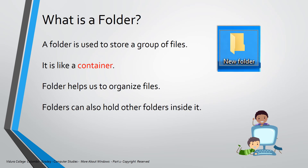What is a folder? You can see a yellow color icon on the desktop — this is called a folder. A folder is used to store a group of files. It's like a container. Folder helps us to organize files. Folders can also hold other folders inside.